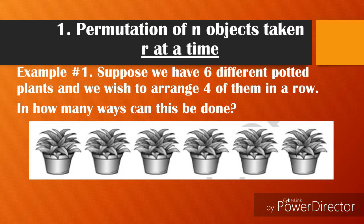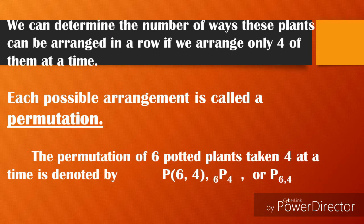Example number one: Suppose we have six different potted plants and we wish to arrange four of them in a row. In how many ways can this be done? We can determine the number of ways these plants can be arranged in a row by taking four at a time. Each possible arrangement is called a permutation. The permutation of six potted plants taken four at a time is denoted by P(6, 4).